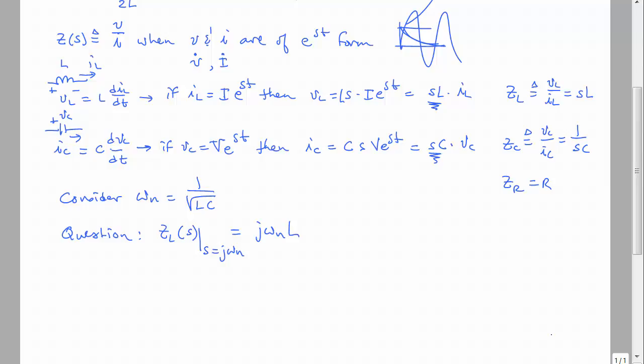Since omega N equals 1 over the root of LC, we can write L over root of LC. Pulling L into the radical gives J times the square root of L squared over LC, which reduces to the square root of L over C.